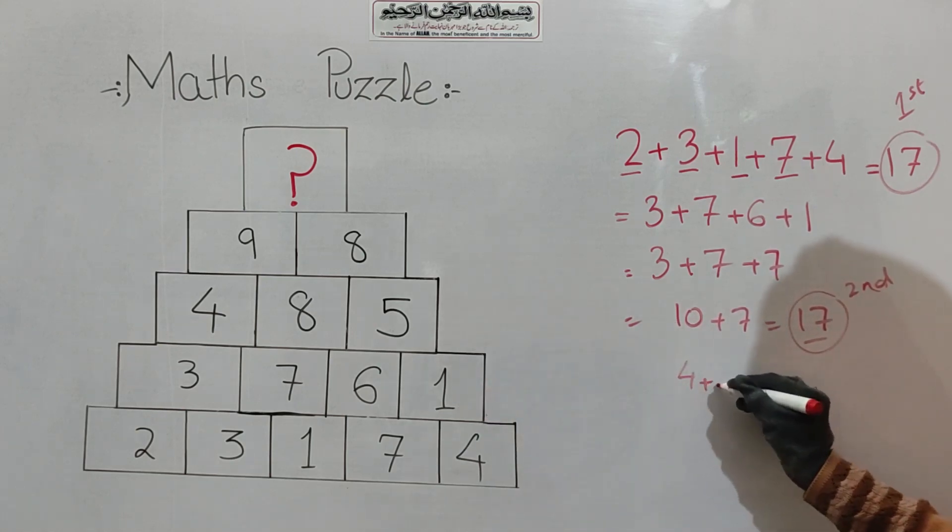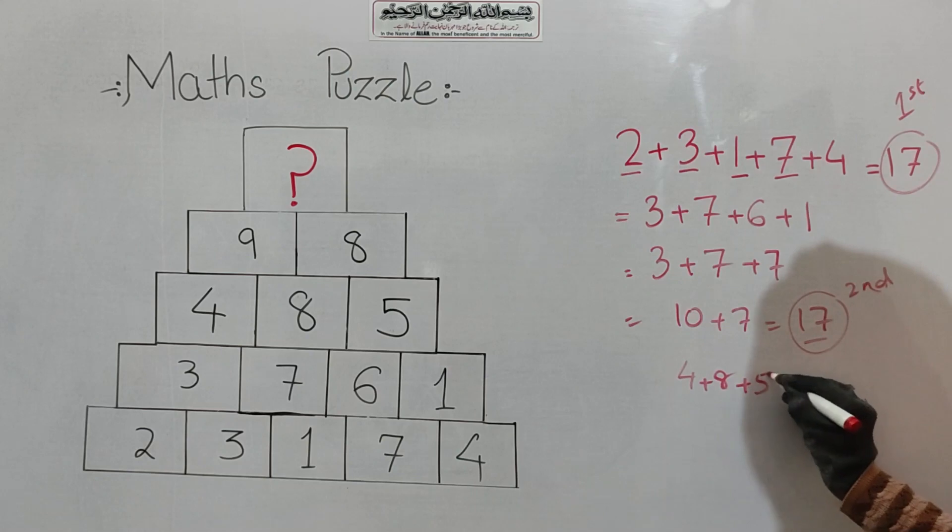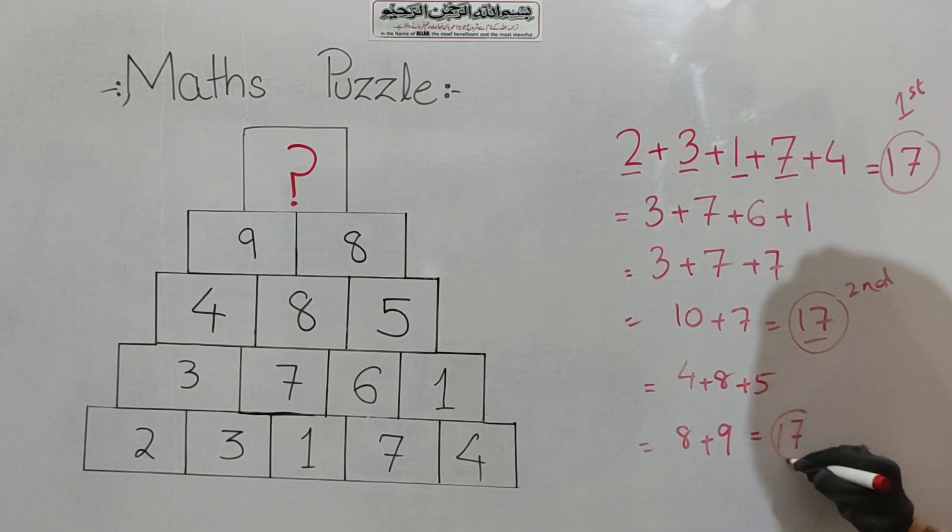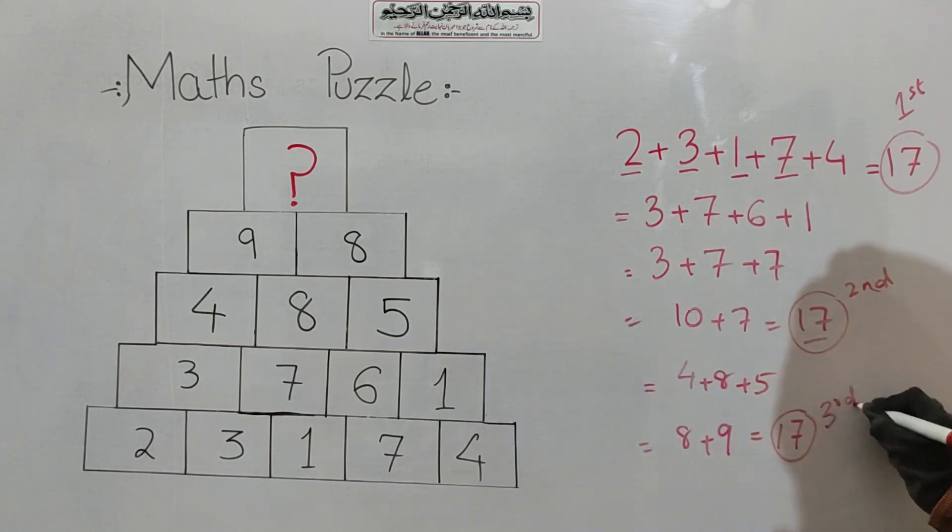Let's check it out: 4 plus 8 plus 5. 4 plus 8 is 12, plus 5, you have 17. Here also, we have 17 as the answer.